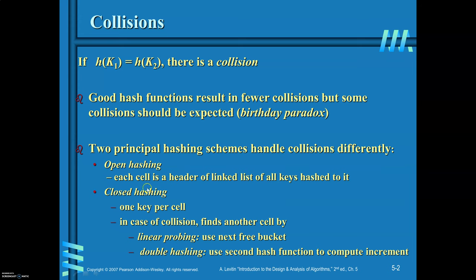In open hashing, each cell is a header of a linked list of all keys hashed to it. In closed hashing, there is one key per cell. In case of collision, it finds another cell by linear probing — that is, use the next free bucket. Double hashing uses a second hash function to compute the increment.